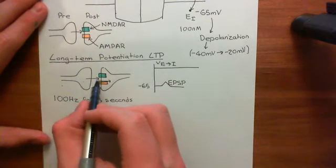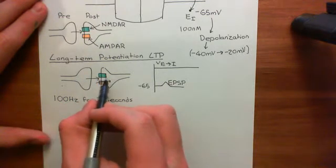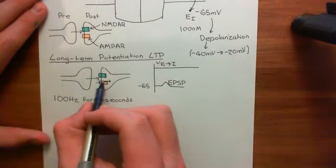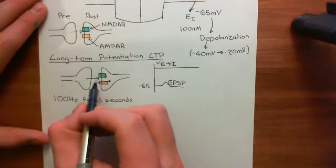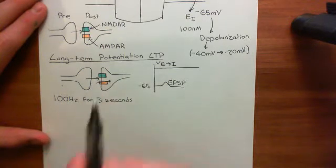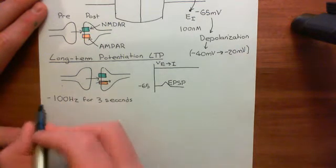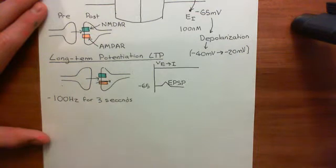It's going to release glutamate onto the postsynaptic neuron 300 times. I'm going to stimulate it at 100 hertz for 3 seconds — stimulate it like mad.